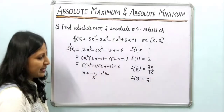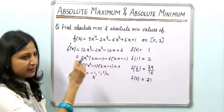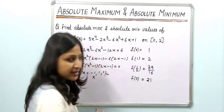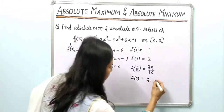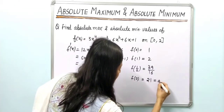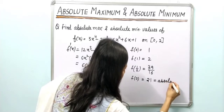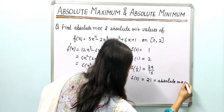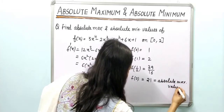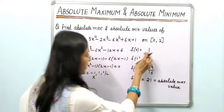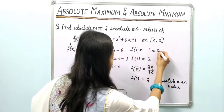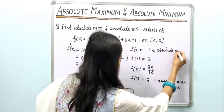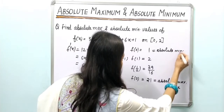Comparing all values, the maximum value is 21 at x = 2, so this is the absolute maximum value of the function at x = 2. The lowest value among all computed values gives us the absolute minimum value. So that is how we determine absolute maximum and absolute minimum for this question.